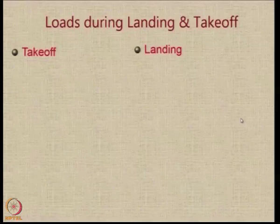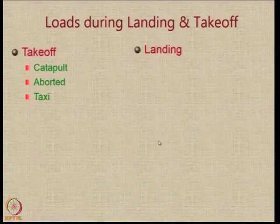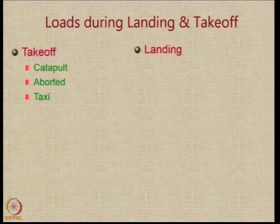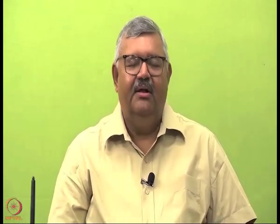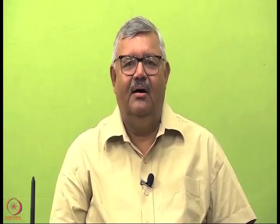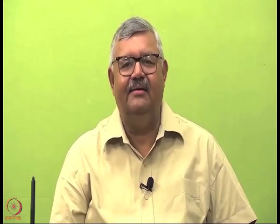Let us take for example the loads acting during landing and takeoff. During takeoff, there could be 3 kinds of load. One is the load acting when you have a catapult takeoff — you literally throw the aircraft with some force provided by the catapult, most applicable for aircraft launched on naval air carriers. Catapults are generally steam powered. During aborted takeoff, there will be huge loads acting on the landing gear because of the braking. And then there are loads acting during taxiing.